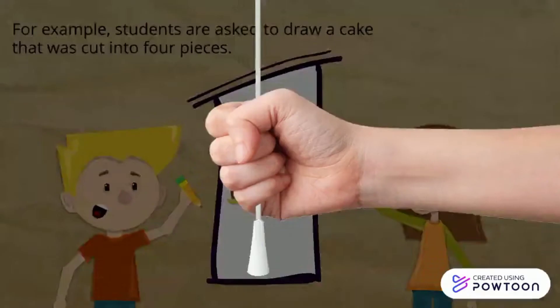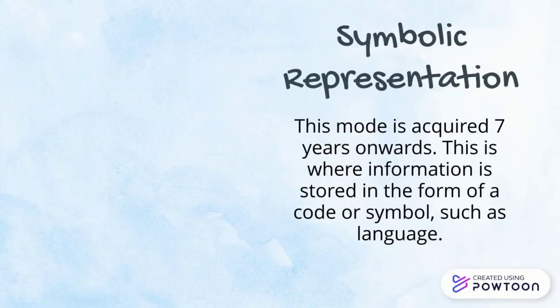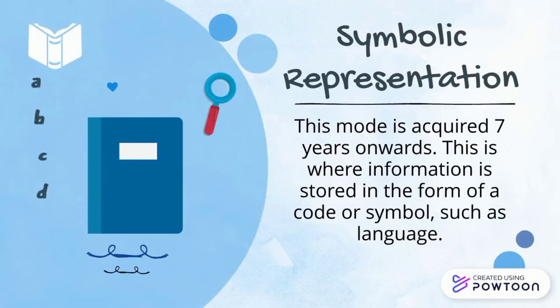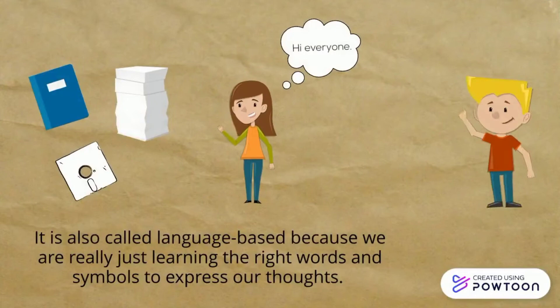Last comes symbolic representation. This mode is acquired from seven years onwards. This is where information is stored in the form of a code or symbol, such as language. It is also called language-based because we are really just learning the right words and symbols to express our thoughts.